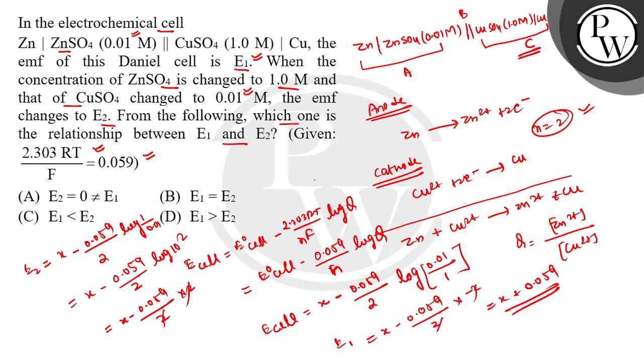So E1 is E° plus 0.059 and E2 is E° minus 0.059. This means E1 greater than E2. Option A, E2 equals 0? No. E1 equals E2? No. The answer is E1 greater than E2.